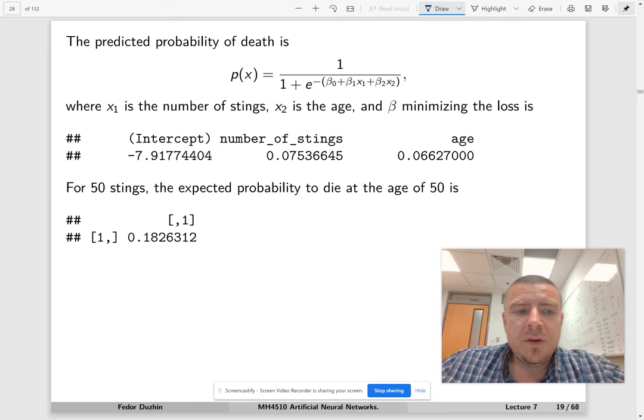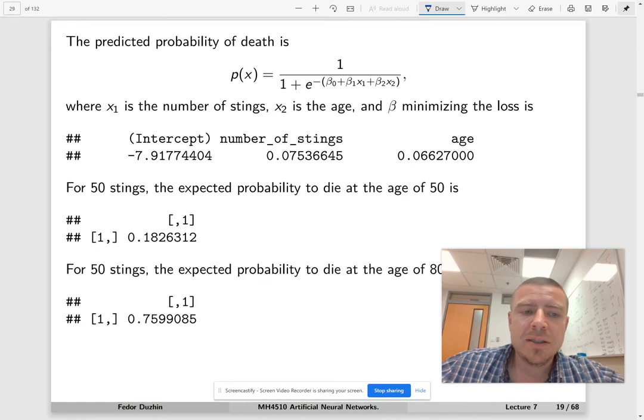Now, for 50 stings, the expected probability to die now depends on age, right? So at the age of 50 is much less than the expected probability to die at the age of 80, of course. Very reasonable. So I'm printing it just to make sure that it makes sense.